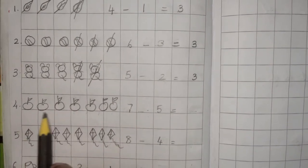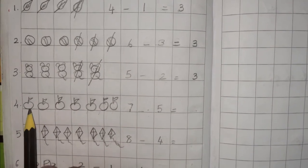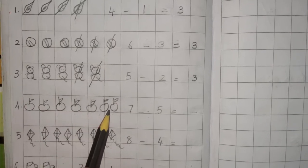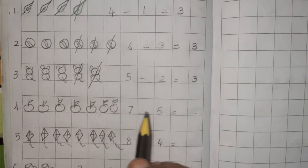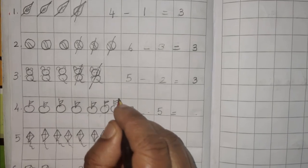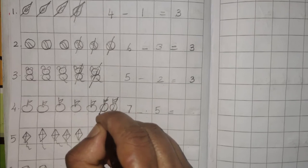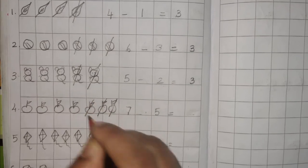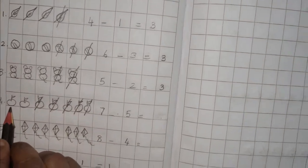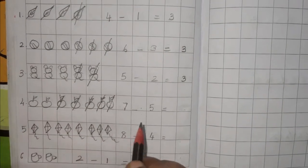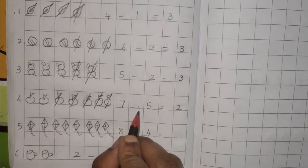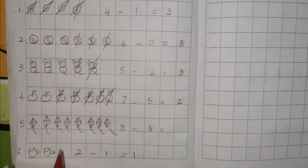Seven minus five. How many apples are there here? 1, 2, 3, 4, 5, 6, 7 — seven apples. Now we are cancelling five apples, start from the right side: 1, 2, 3, 4, 5. How many apples are left over? 1, 2 — so the answer is two. Seven minus five is equal to two.